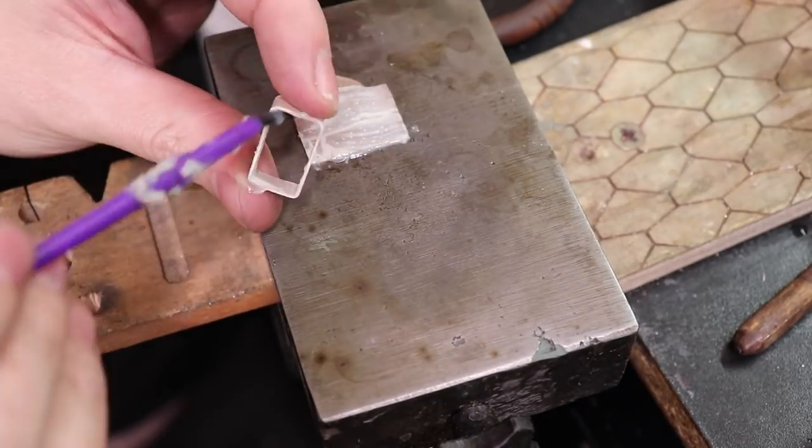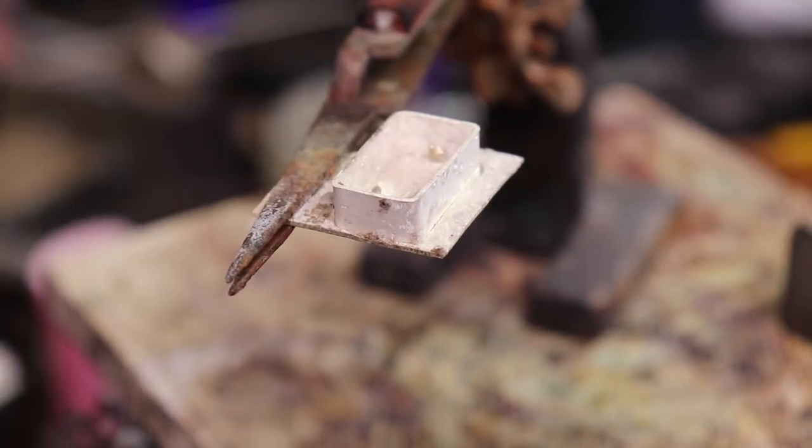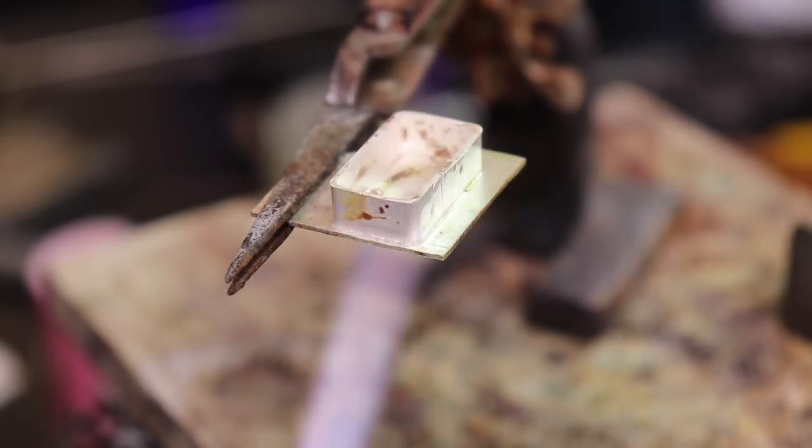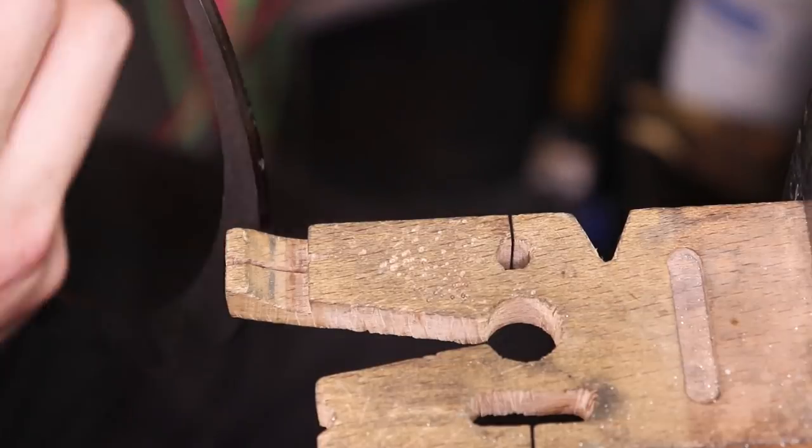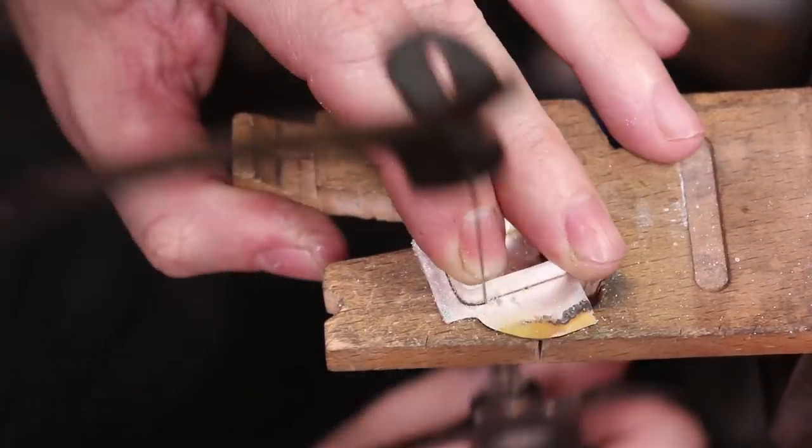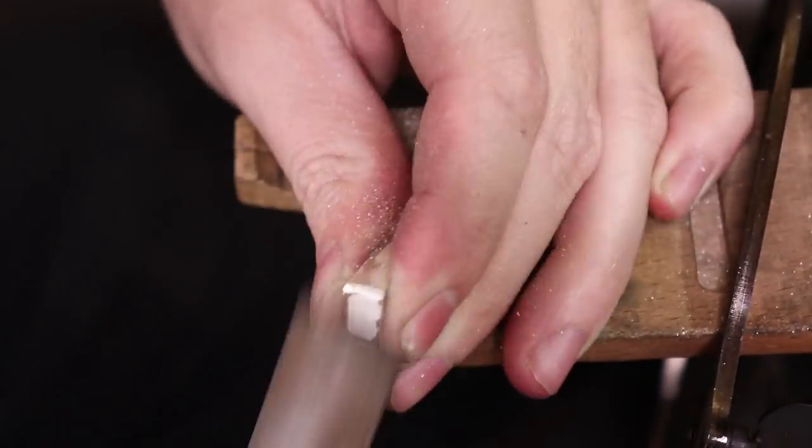Now with that done, I can flux both pieces that I'm going to be soldering together and get them soldered together. I'll be using medium solder with these, by the way. So with all that soldered together, I'm going to use my jeweler saw to cut the extra material off of this and use some files to clean it all up and make it all flush as possible.